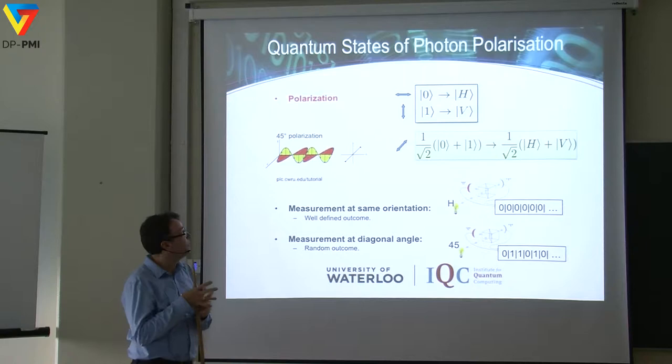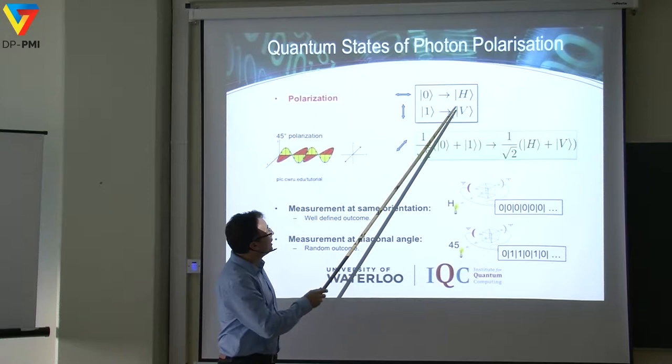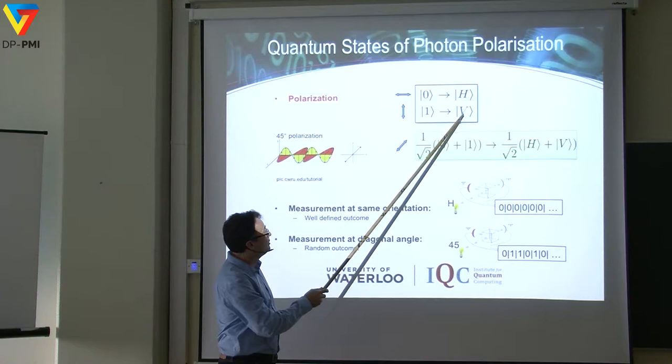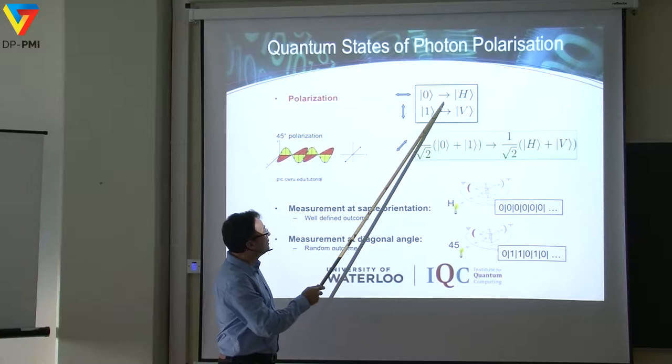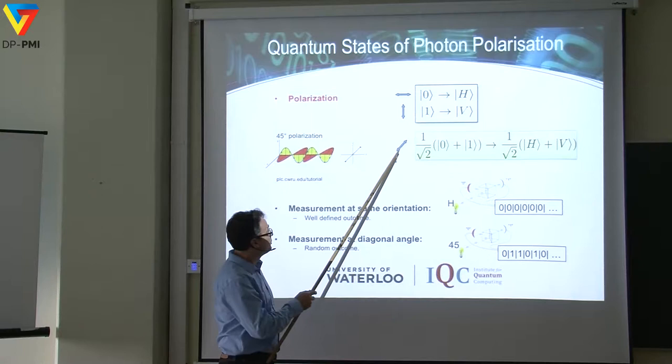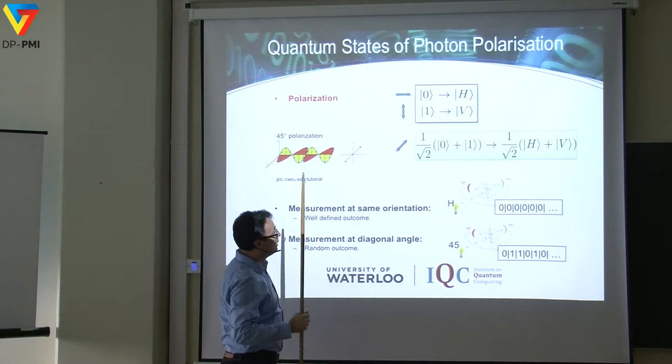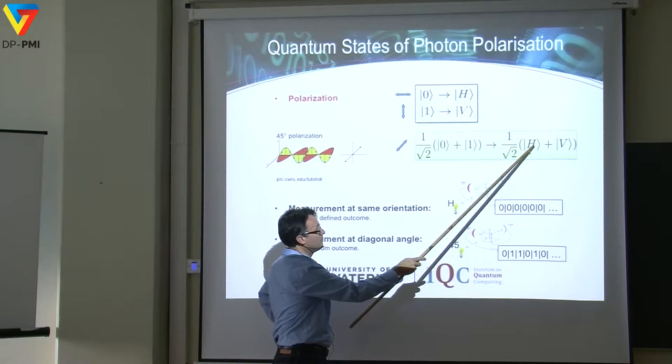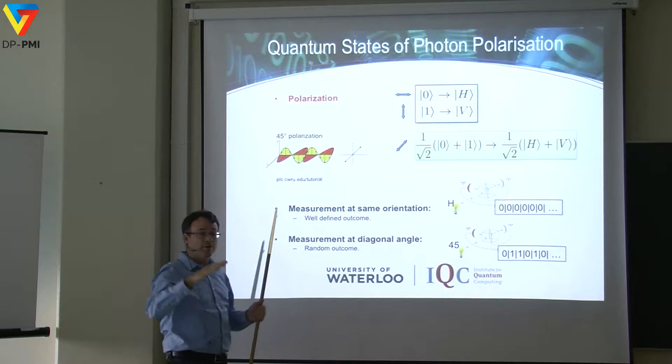How can photons carry quantum information or qubits? One way is the polarization state. If we use two polarizations — horizontal and vertical — we can associate one state with zero and the other with one. This is a qubit. The superposition of a qubit, zero plus one, corresponds in polarization to the superposition of H and V, which gives a 45-degree linear polarization state. At the single photon level, single photons can take these polarization states.